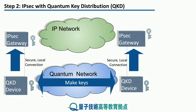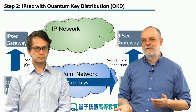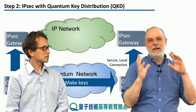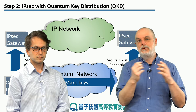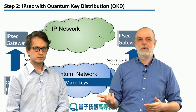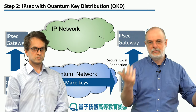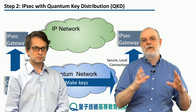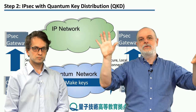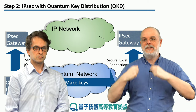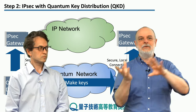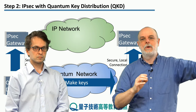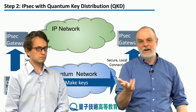The first job that happens is the quantum network makes those keys and produces those classical bits. Then it's going to share those bits with a couple of boxes connected to an IP network called IPsec gateways — one at each end. IPsec is one of the standard internet protocols for how you encrypt data shared across a network. One other famous protocol is TLS, used for web browsing. IPsec is slightly older than TLS and was originally designed to connect one network to another network securely.